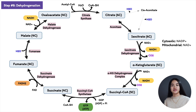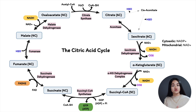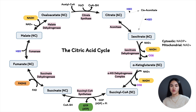We have now completed one turn of the cycle. Remember that glycolysis produces two pyruvate molecules, which are converted to two acetyl-CoA molecules — so two acetyl-CoA molecules enter the cycle, meaning the cycle turns twice.